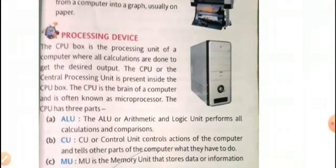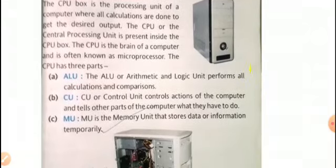Here, the CPU Box is the Processing Unit of a Computer. And it is also known as the Brain of the Computer, where all calculations are done to get the desired output. Computer CPU has mainly three parts: ALU, CU and MU.